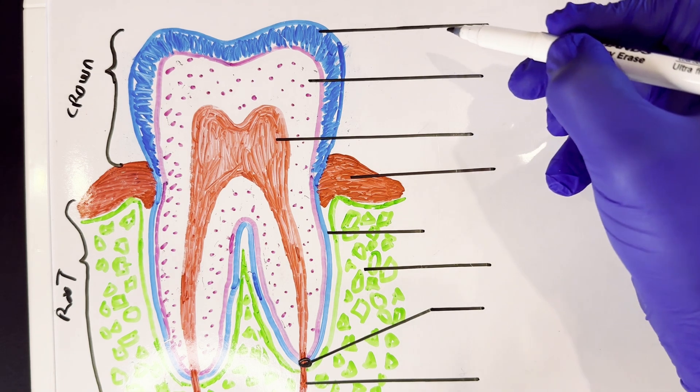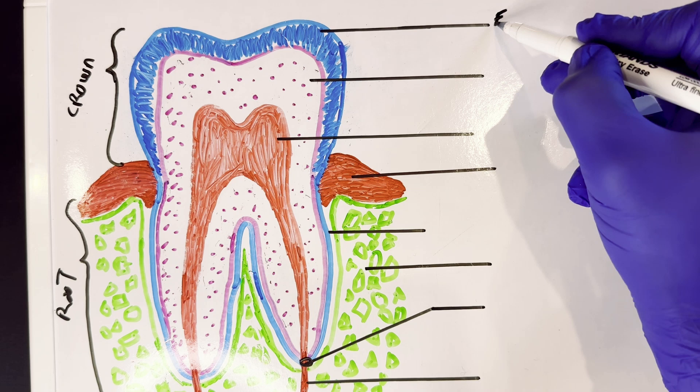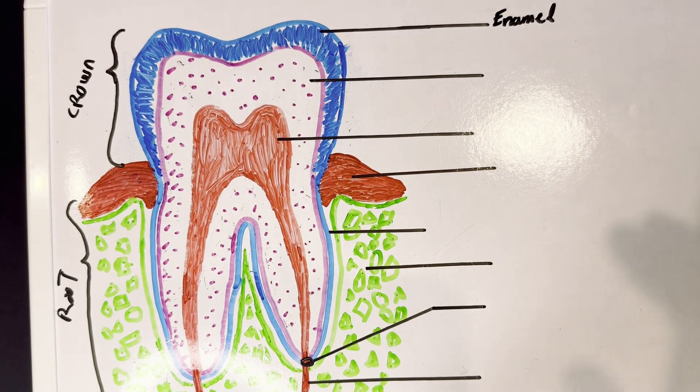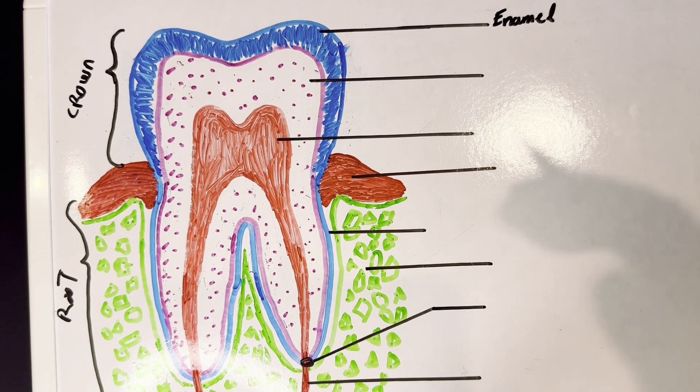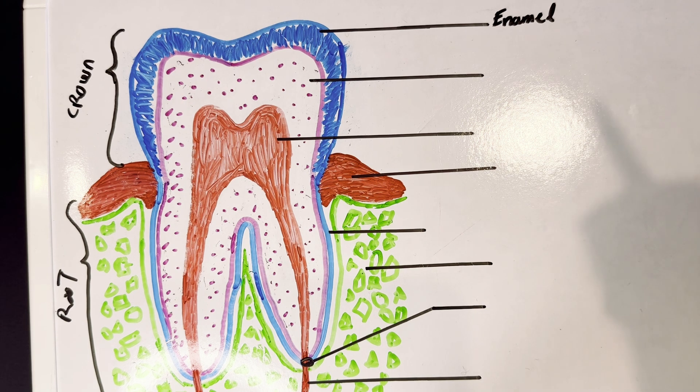So the outermost layer of the tooth that I've drawn in blue is called the enamel of the tooth. Now the enamel is the hardest structure in our bodies, believe it or not. It's even harder than bone. It's about 96 percent mineralized and it is the most fluoride rich part of the tooth, the most protective outer layer.